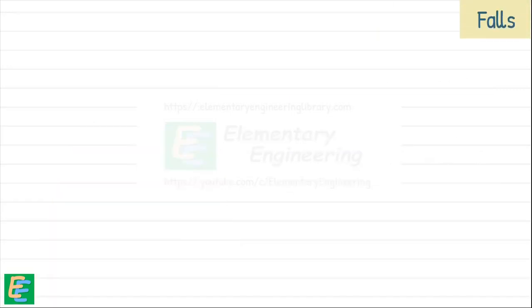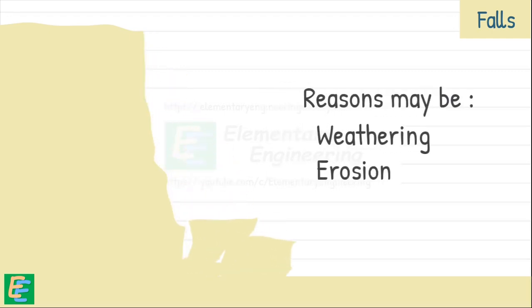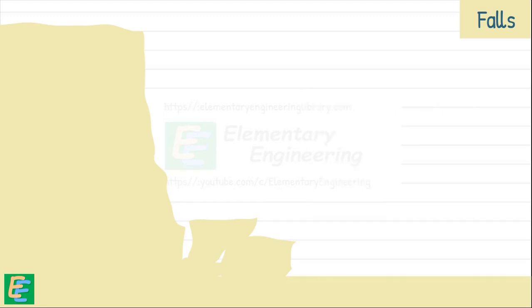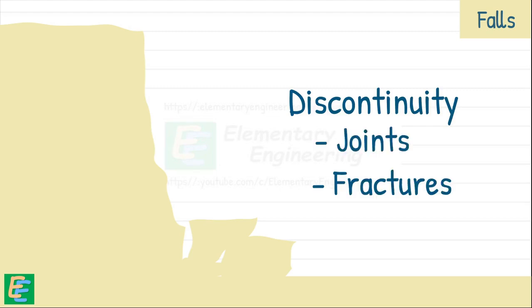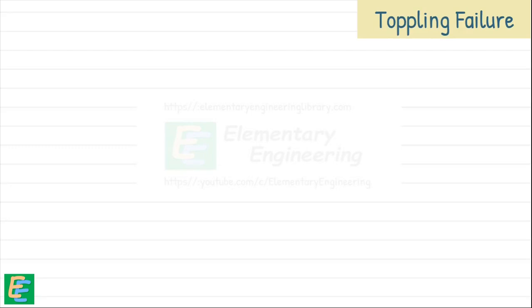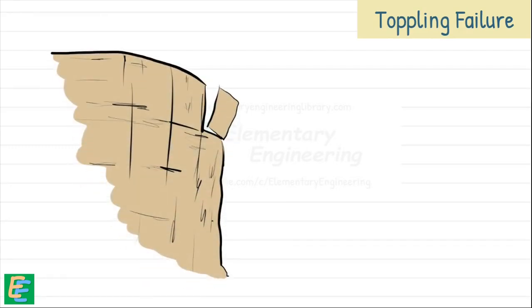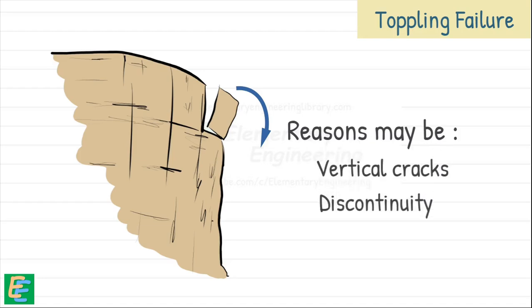Then there are falls type of failure. Falls occur when rocks suddenly detach and drop due to weathering, erosion or cracks in the rock. This abrupt movement is often triggered by the presence of discontinuities like joints and fractures. Then there is toppling failure. Toppling failure occurs when blocks of rock rotate forward and fall due to gravity. This typically happens on steep slopes with vertical cracks or discontinuities causing the rock to tilt and eventually topple over.